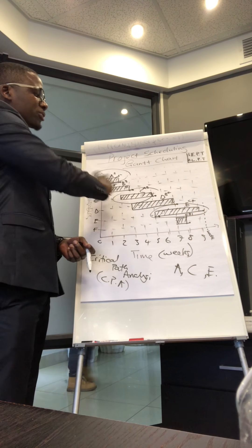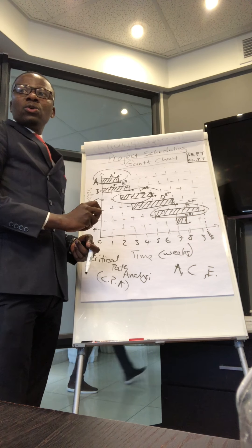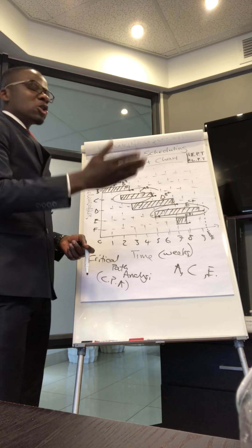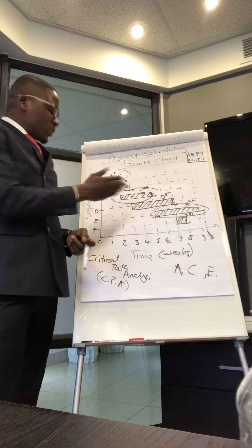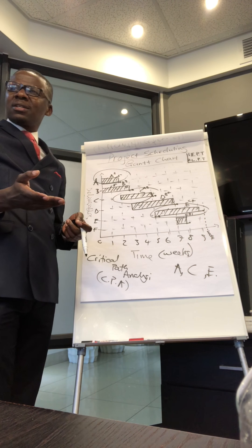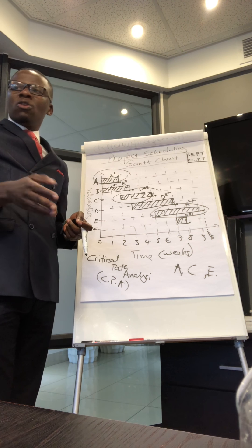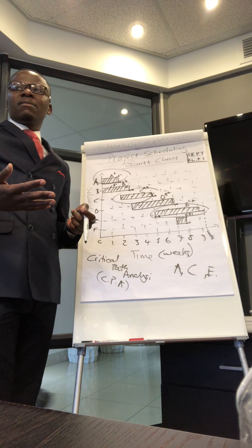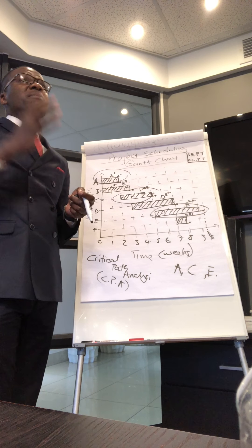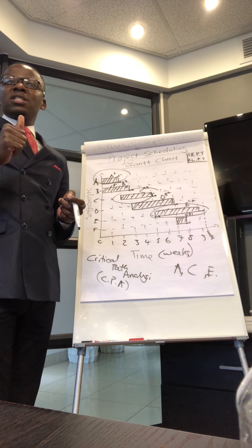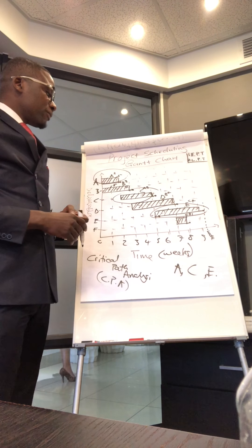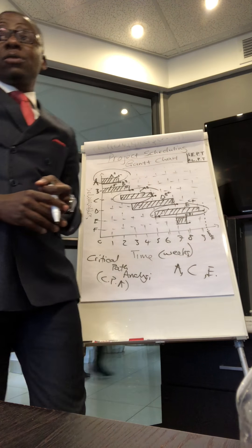This is called Critical Path Analysis. You take items from your work breakdown structure and construct your activities on the Gantt chart. You may ask where these time estimates come from — for example, why does A take two weeks and B take three weeks? Of course you are estimating, but not by thumb-sucking. You estimate using a certain formula which will be shown at a later stage. But for now, this is a Gantt chart — any questions?